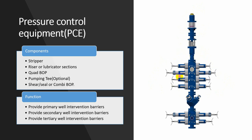If the secondary barrier also fails, or the leak occurs between the flanges, we can close the next barrier which is the pipe slip. Or if we only have a shear-seal ram, we will shear the coiltube to secure the well. So these are the barriers: primary barrier — stripper; secondary barrier — BOP; and tertiary barrier — shear-seal ram.